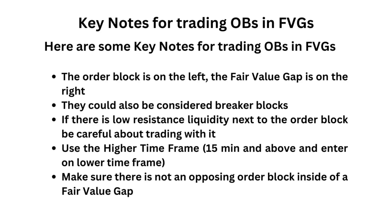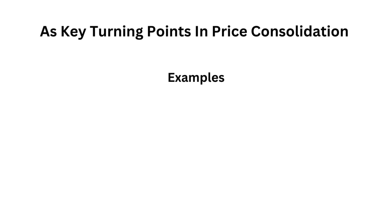Here are some key notes for trading order blocks and fair value gaps. The order block is on the left and the fair value gap is on the right. The order blocks could also be considered breaker blocks. If there is low resistance liquidity next to the order block, be careful about trading. Use the higher time frame — 15 minutes and above — to measure out your trade and then enter on the lower time frame. Make sure that there is not an opposing order block inside of a fair value gap on the other side of your trade that's too close and won't give you enough room for your move.